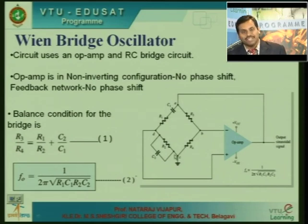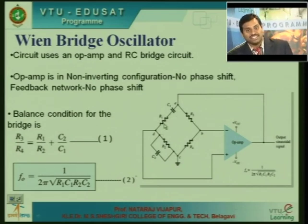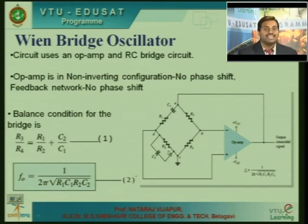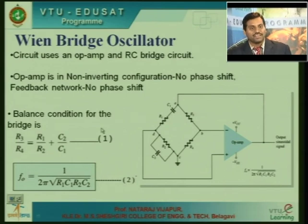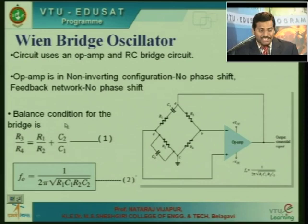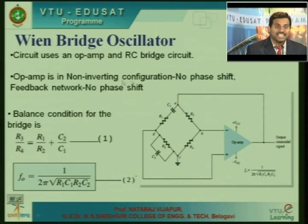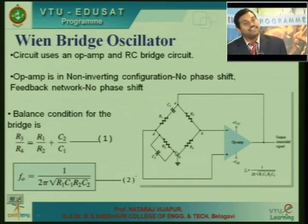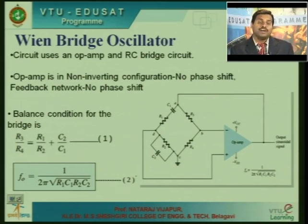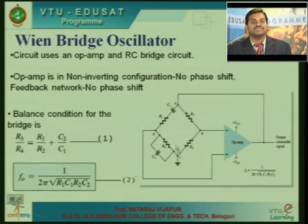Here we use an RC bridge called the Wien bridge, which consists of a series arm and a parallel arm of RC networks — a lead network as well as a lag network. At a particular condition, the bridge will be balanced. When the bridge is balanced, the phase shift introduced will be 0. The condition for balancing is: R3/R4 should equal R1/R2 + C2/C1. The Wien bridge does not introduce any phase shift.